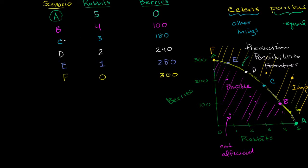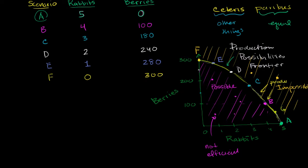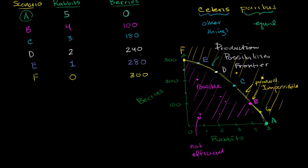We've already spent a lot of time thinking about these six different scenarios, all of which sit on the production possibilities frontier, which means that in any of these scenarios we have achieved productive efficiency. That's true not just of these scenarios — it's true of any of the points on this curve. So any point on that curve gives you productive efficiency.